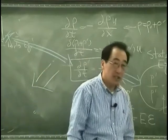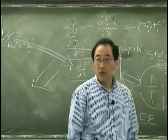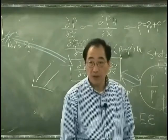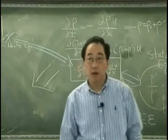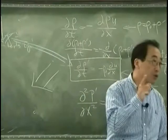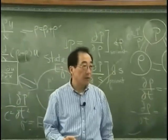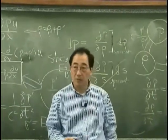That is acoustic power. So P multiplied by U is acoustic power per unit area.